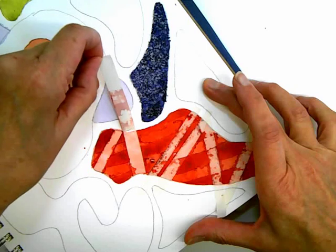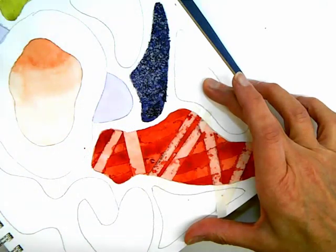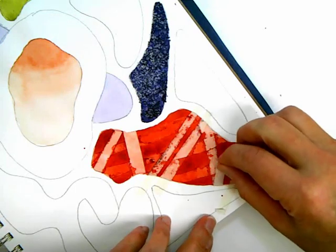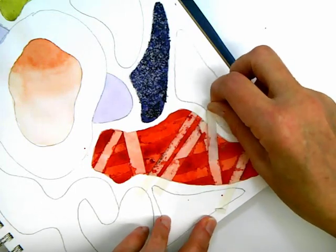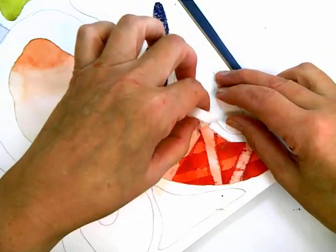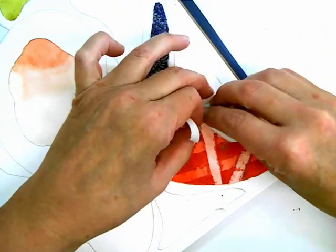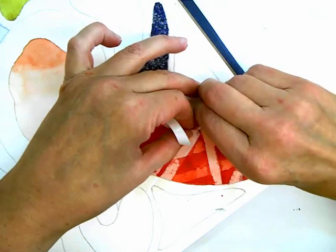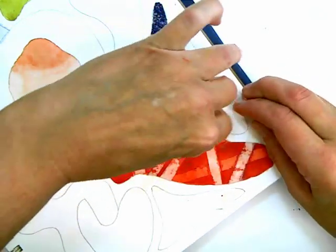Masking fluid is a material that's very similar to rubber cement. In fact, some watercolor artists will use rubber cement and it's painted down onto the paper.